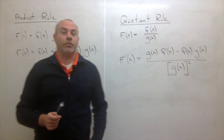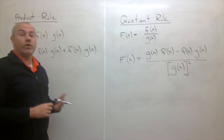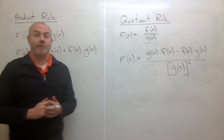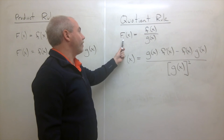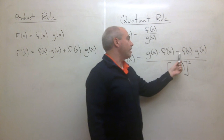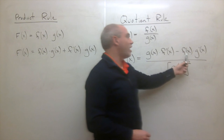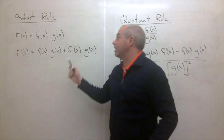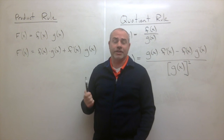Now we can talk about what's called the quotient rule. It's similar but looks a little more complicated. We can prove it in much the same way — the proof is in your book if you're interested. The quotient rule says: if capital F of X equals f of X divided by g of X, then the derivative is g of X times f prime of X, minus f of X times g prime of X, all over g of X squared. It's the bottom times the derivative of the top, minus the top times the derivative of the bottom, over the bottom squared.